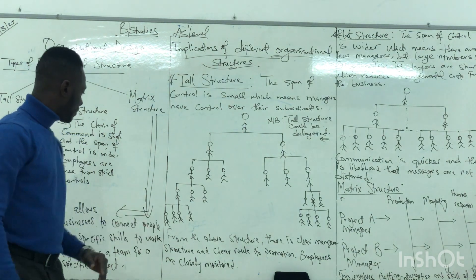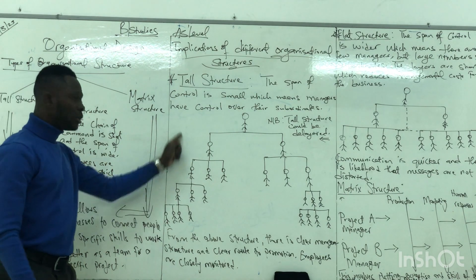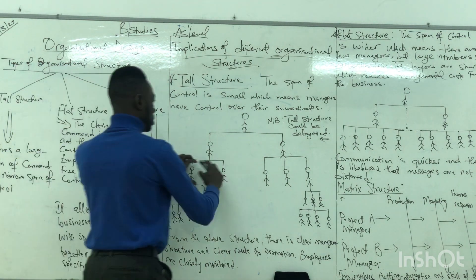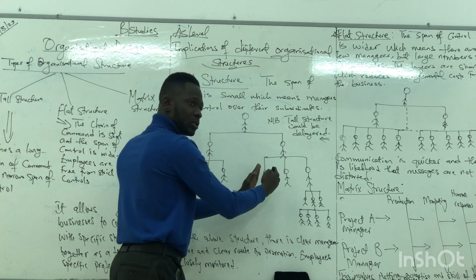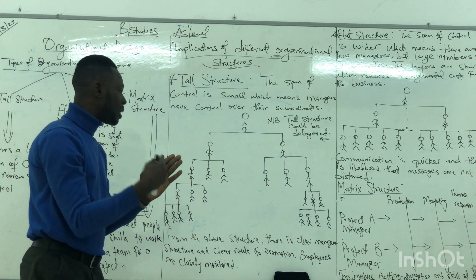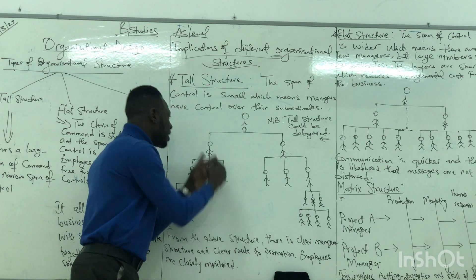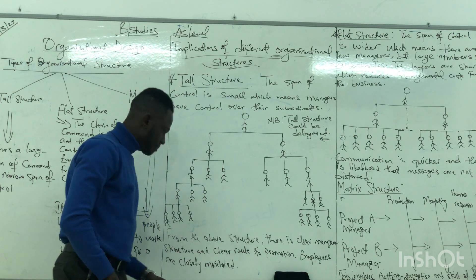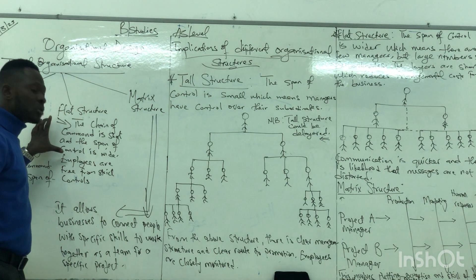So to be clear: the tall structure has a long chain of command and a narrow span of control — meaning there are few subordinates under each manager. Now let's go to the second one, which is the flat structure.